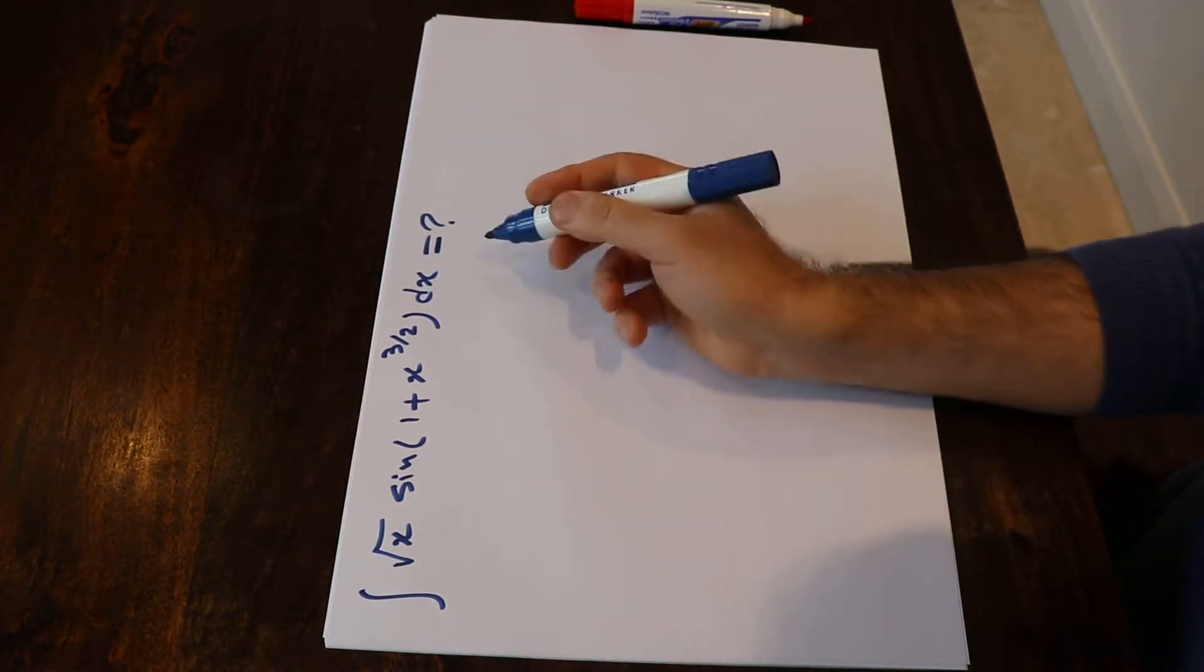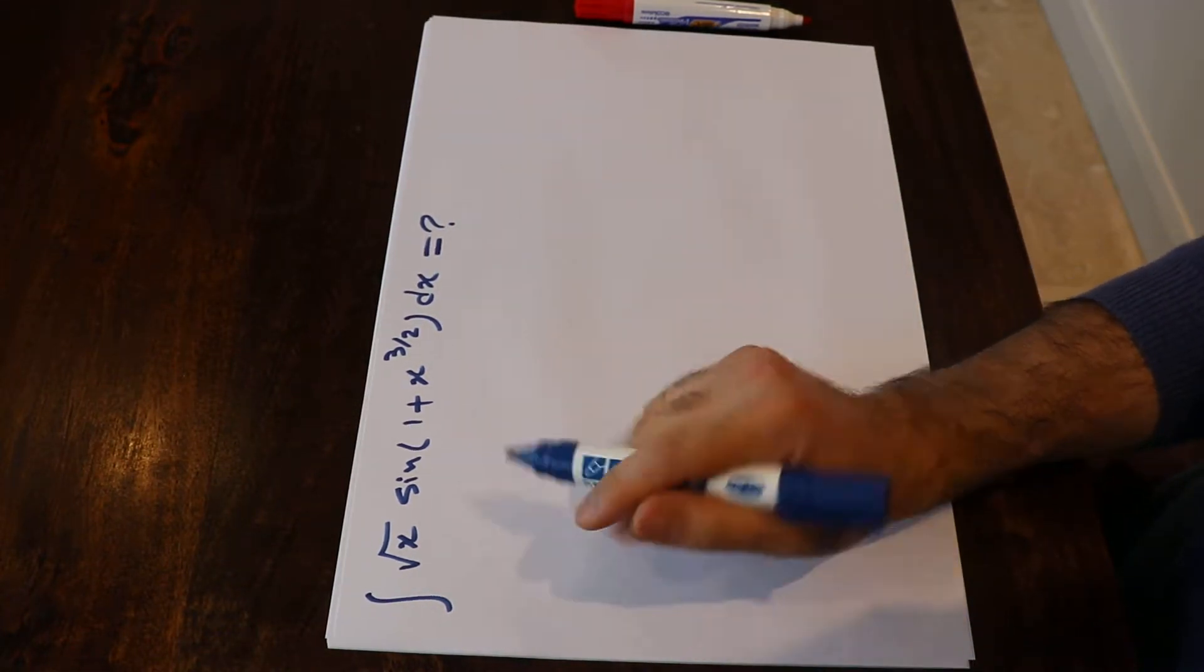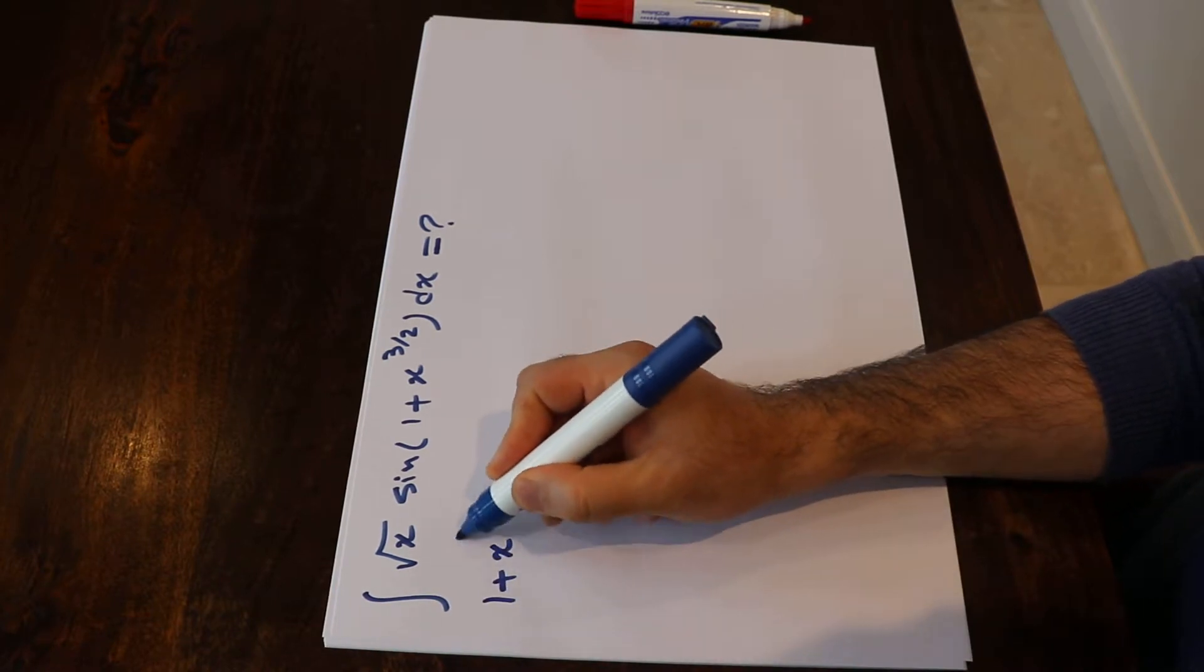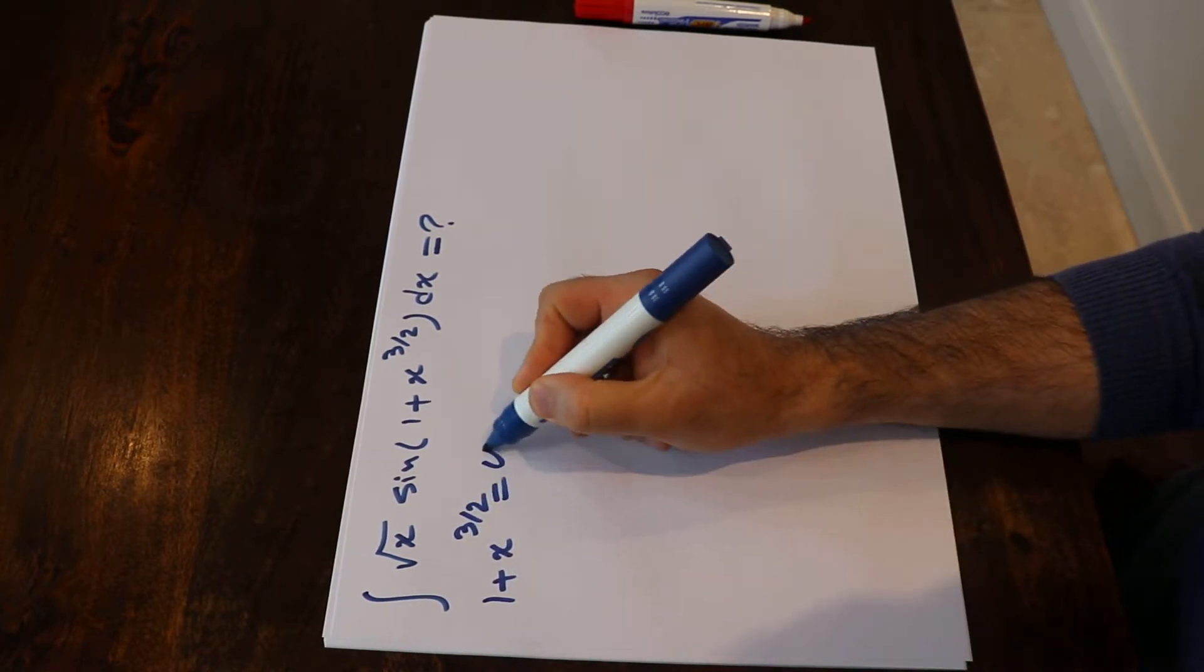To solve this integral, you need to use substitution rule. If you define 1 plus x to the power of 3/2 as u,